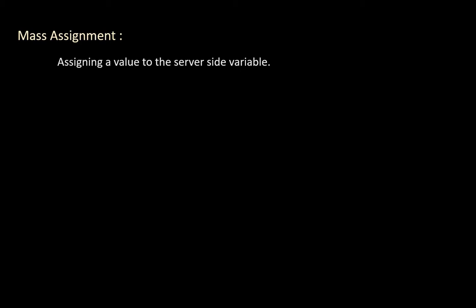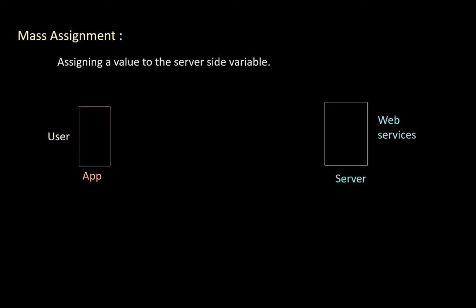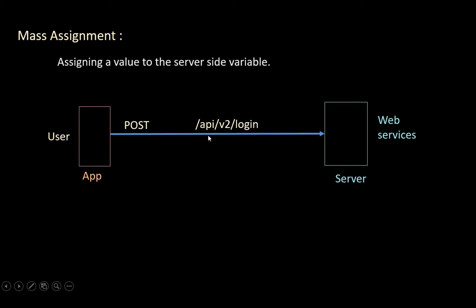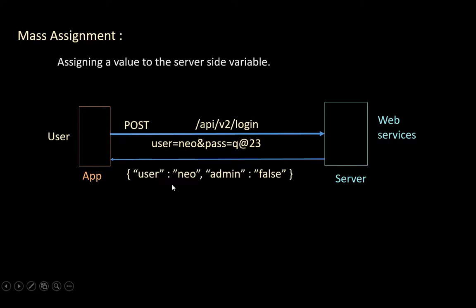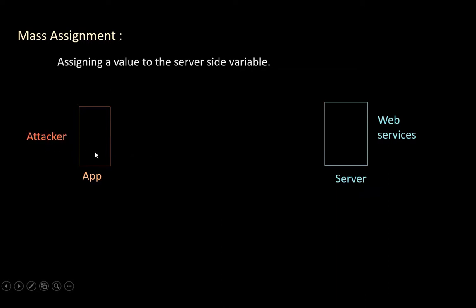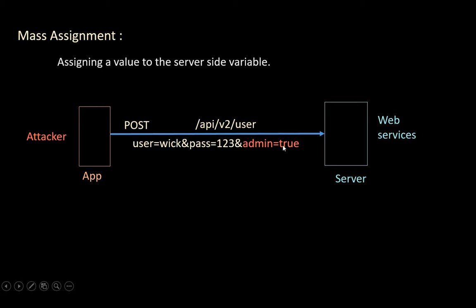Mass Assignment: in this attack, the attacker assigns a value to a server-side variable. When a user logs into the app, an API call is made to the login endpoint with username and password. In the response, the server sends the username and admin status — the admin variable is set to false by default. If the attacker registers a new user and sends the request with the admin value set to true, they can gain admin access to the server.